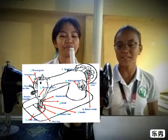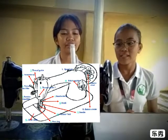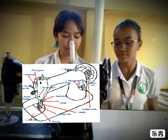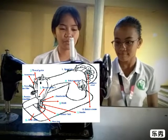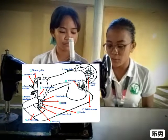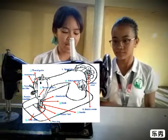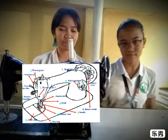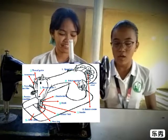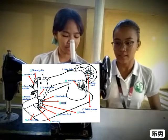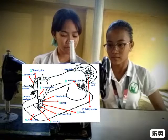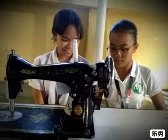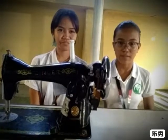Parts of the sewing machine under the bed consist of six parts. The feed dog moves the fabric while sewing. The throat plate is the window of the feed dog. Slide plate is the movable plate that covers the shuttle and bobbin case. The shuttle holds the bobbin case while sewing. The bobbin is a metal spool of winding thread. The bobbin case holds the bobbin.